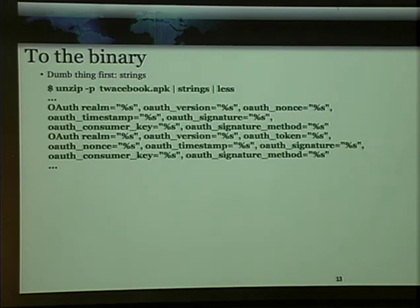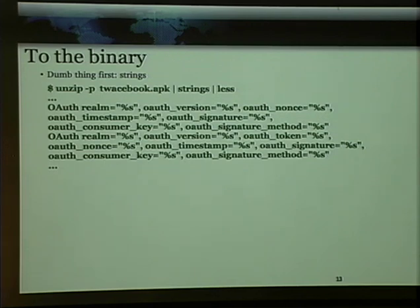Doing the dumb thing first: APKs are glorified zip files. That's how Java programs are packaged, and APKs are a subset of Java that we're going to talk about a little bit with Dalvik. So, dumb thing first — we run strings and look at it. Of course you get a whole lot of other junk, you're not just getting this out of strings. But we see that our assumptions are right when we do this — we look at the strings, we're seeing some OAuth things. We're good. We know we're in the right area.